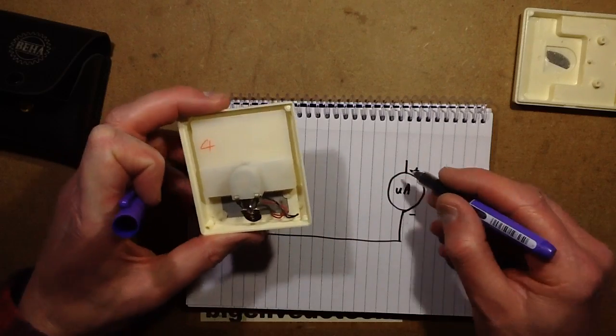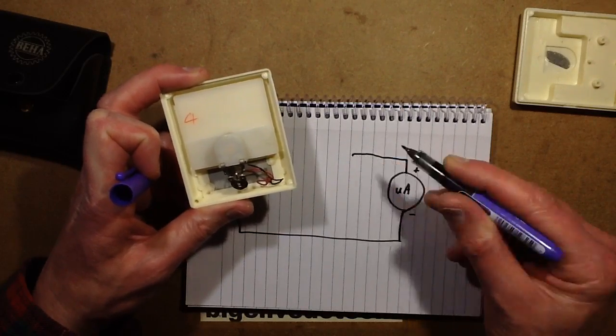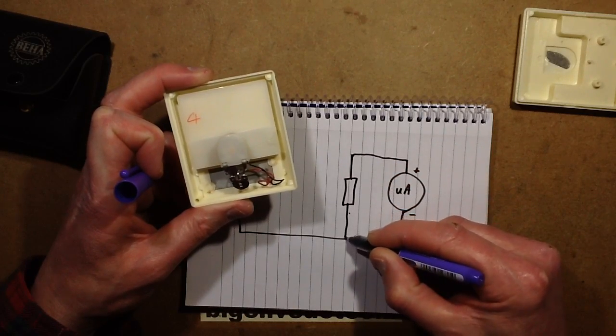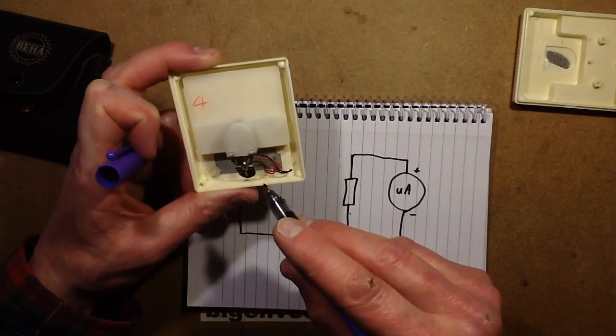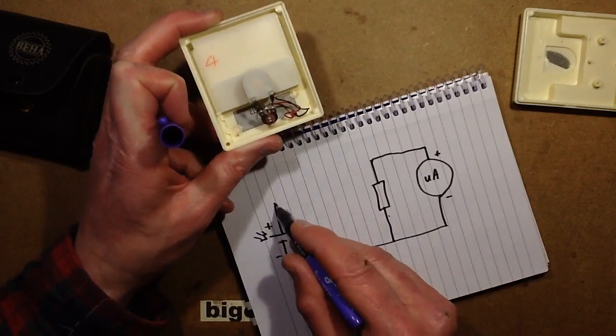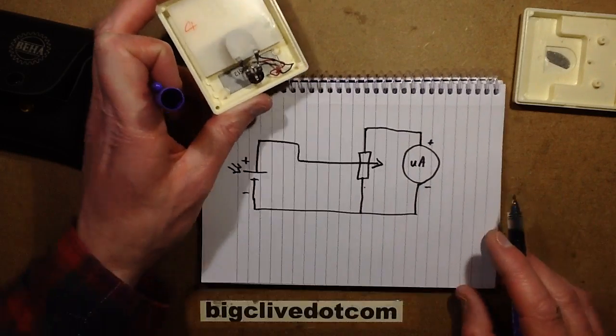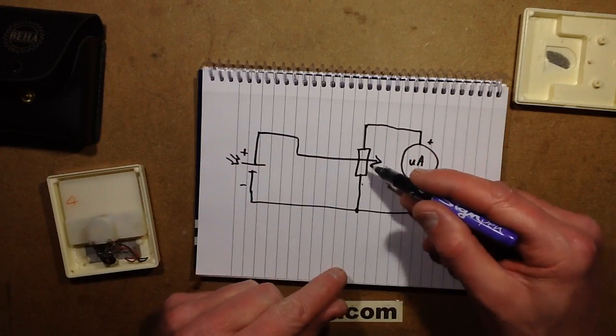The positive of the meter goes to the potentiometer, which is connected between the positive and the negative of the meter. And then the positive from the solar panel comes across. So, you can actually then fine-tune it. You can calibrate it. You can adjust that resistance.